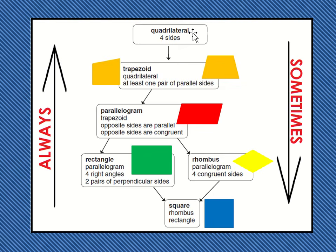So for example, we have our quadrilateral that has four sides. Any shape with four sides that is a polygon is a quadrilateral. Most of our quadrilaterals will also be a trapezoid. And if you remember from our last session, a trapezoid is a shape that is a quadrilateral and it has at least one pair of parallel sides.